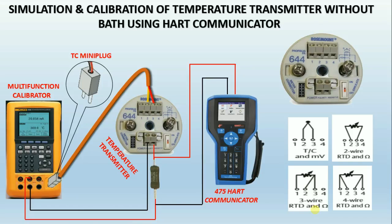After completing connections, simulate the zero temperature value according to the lower range value in HART and check the corresponding 4 milliamps in the process calibrator. If it is not showing the corresponding milliamps, then by using HART, do the lower sensor trim. After this, simulate the full range of the transmitter in the process calibrator and check the corresponding 20 milliamps. If it is not showing the corresponding milliamps, then adjust 20 milliamps by doing upper sensor trim using HART.